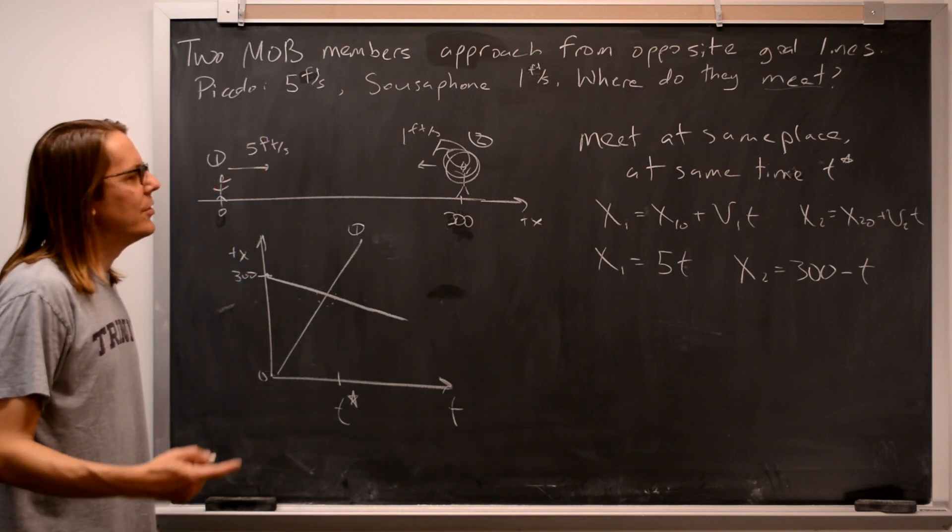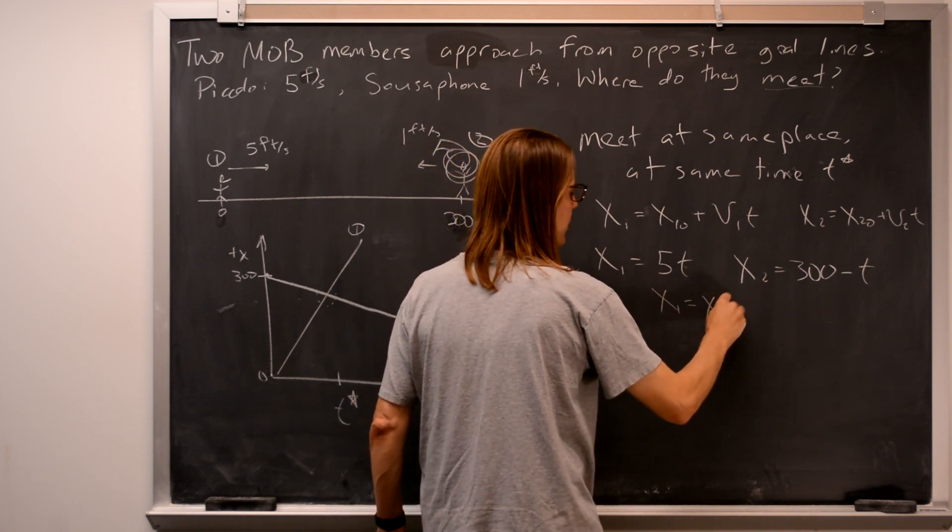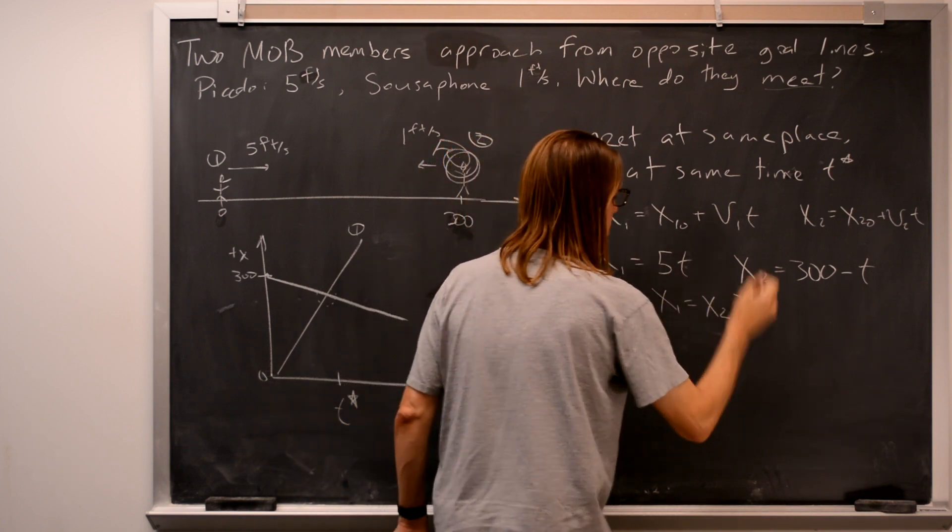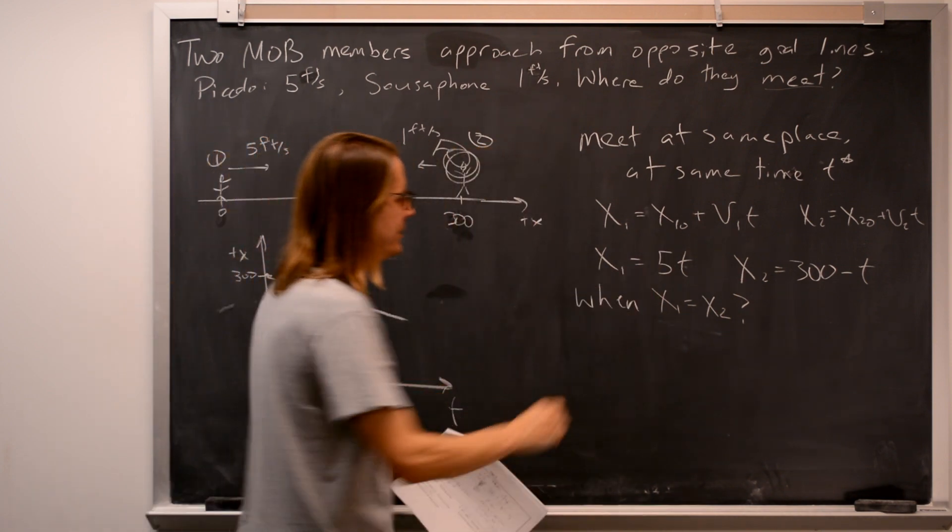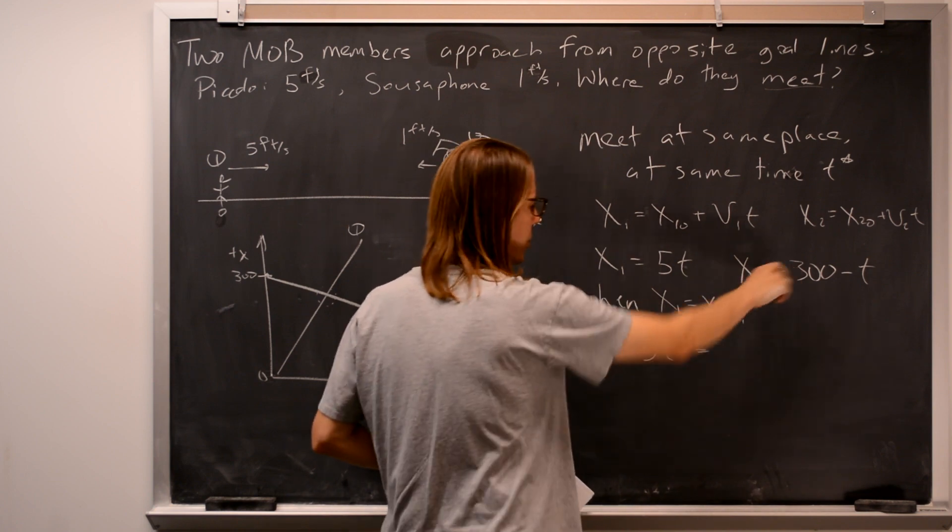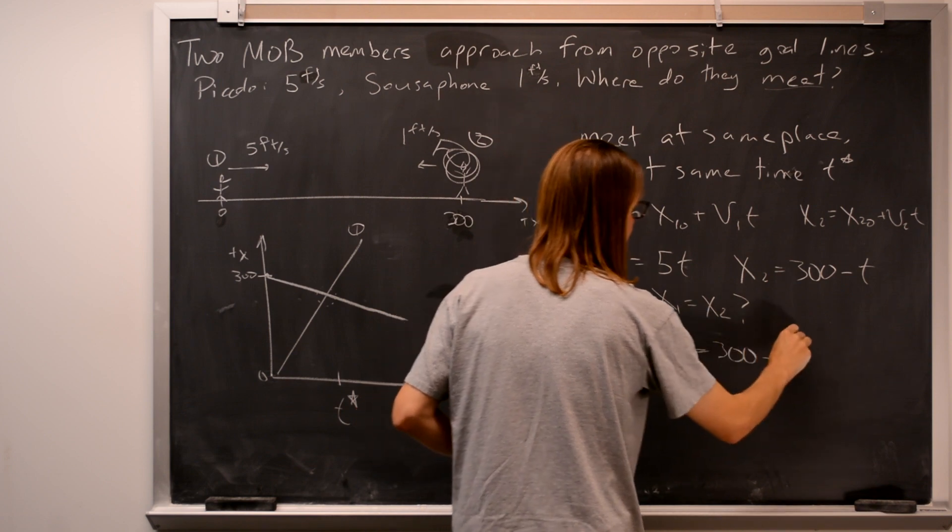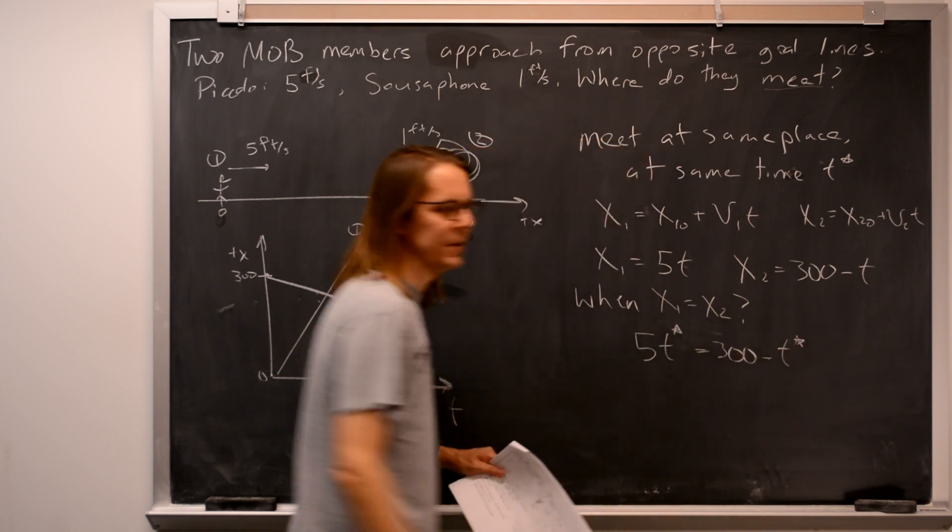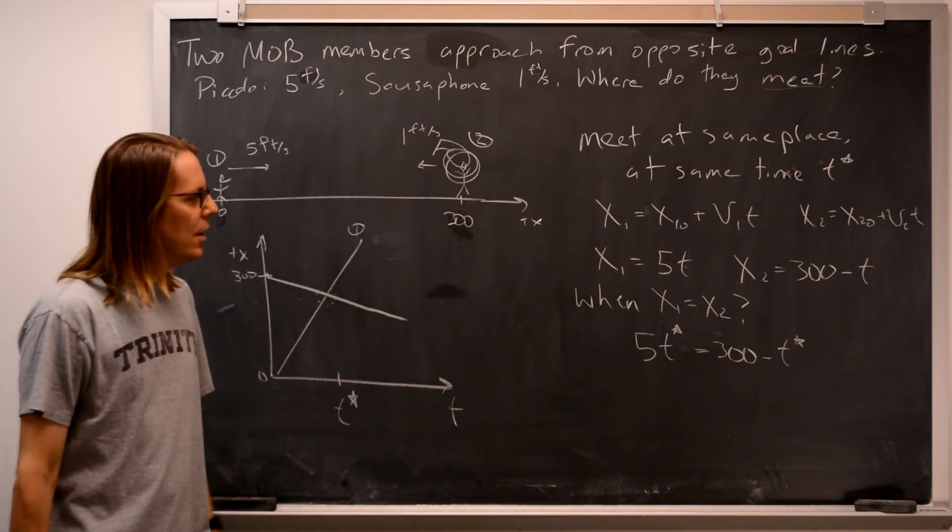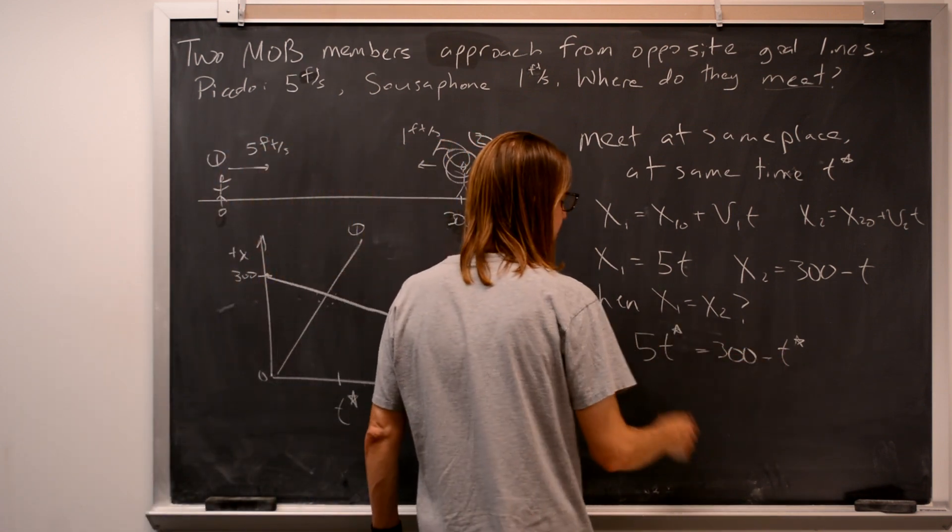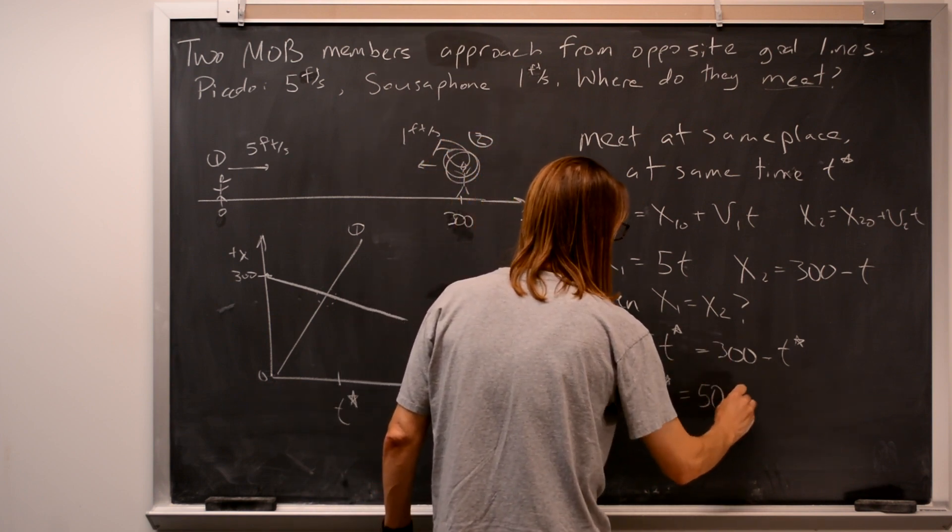Okay, so they meet at the same place at the same time. So what we've got to do is say, when does X1 equal X2? That's all you've got to do. So you say, okay, I'll make X1 5T equal 300 minus T. And now I'll put the star on it because this is a specific time. This is the time when that is true. So we solve that. Bring this over here. 6T equals 300. T star equals 50 seconds.